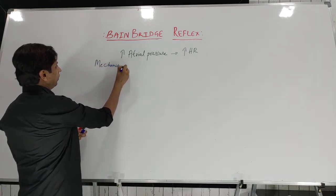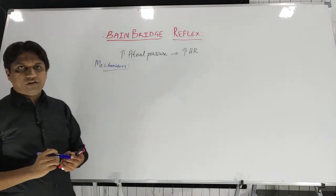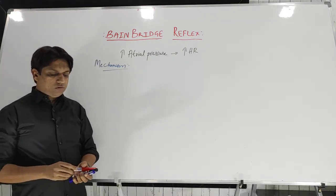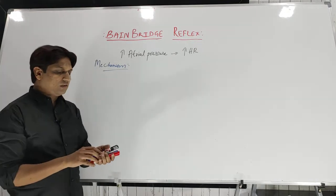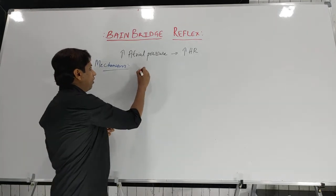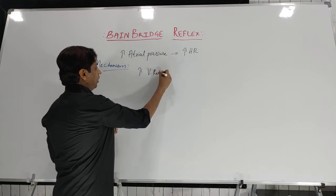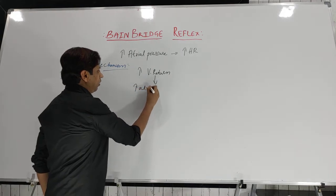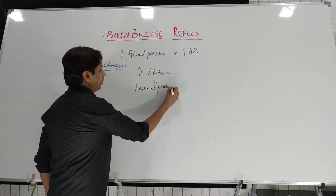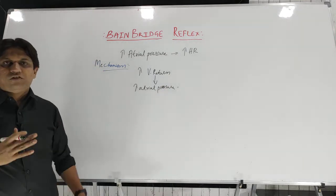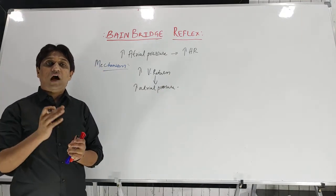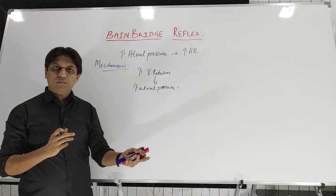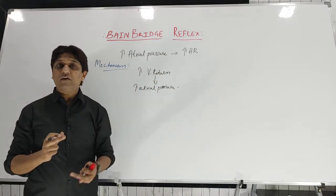Let us see the mechanism of this reflex: how exactly the increase in atrial pressure or central venous pressure causes the increase in heart rate. Whenever there is an increase in venous return, it causes an increase in atrial pressure and atrial filling. Due to that, there is stimulation of stretch receptors present in the atria. These receptors are basically volume receptors — they respond to change in volume, unlike baroreceptors which sense change in pressure.